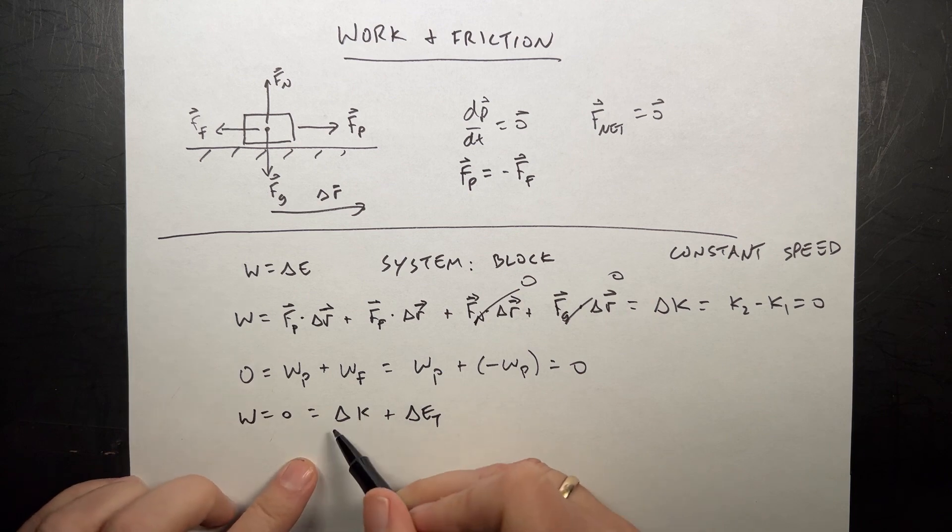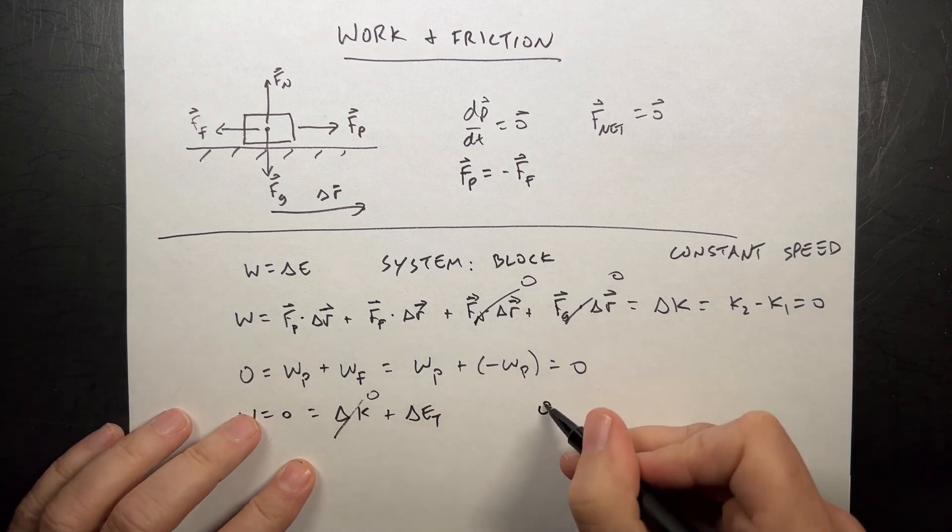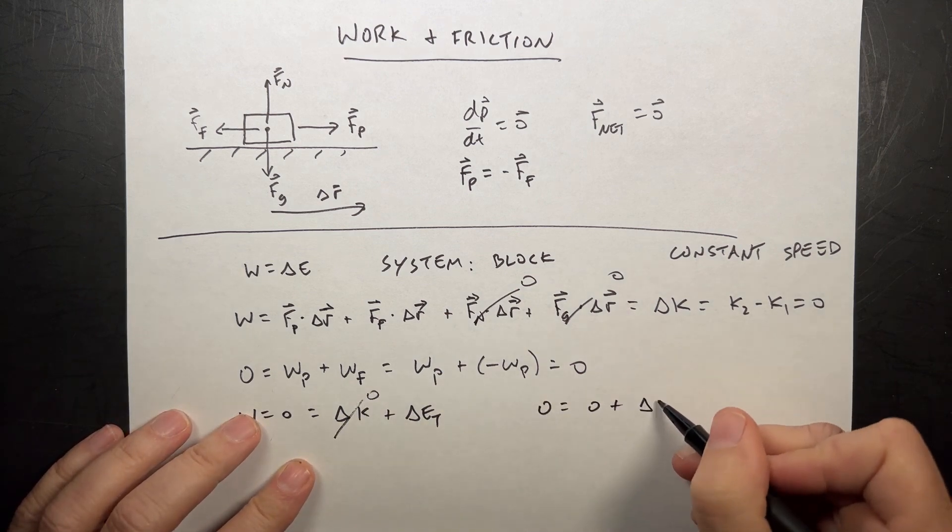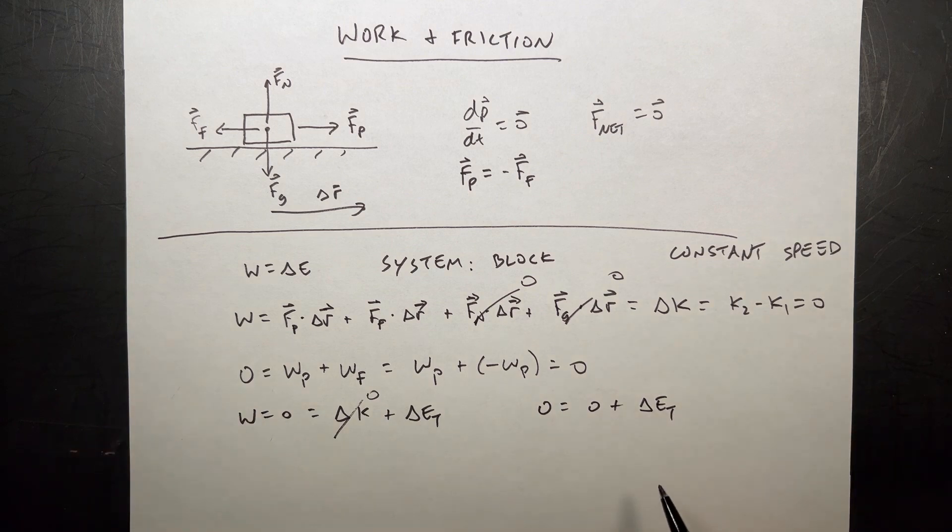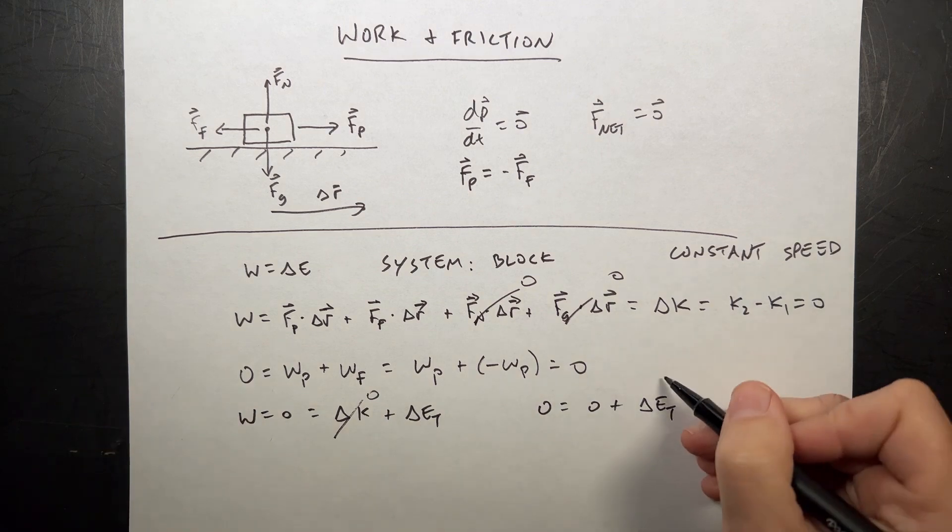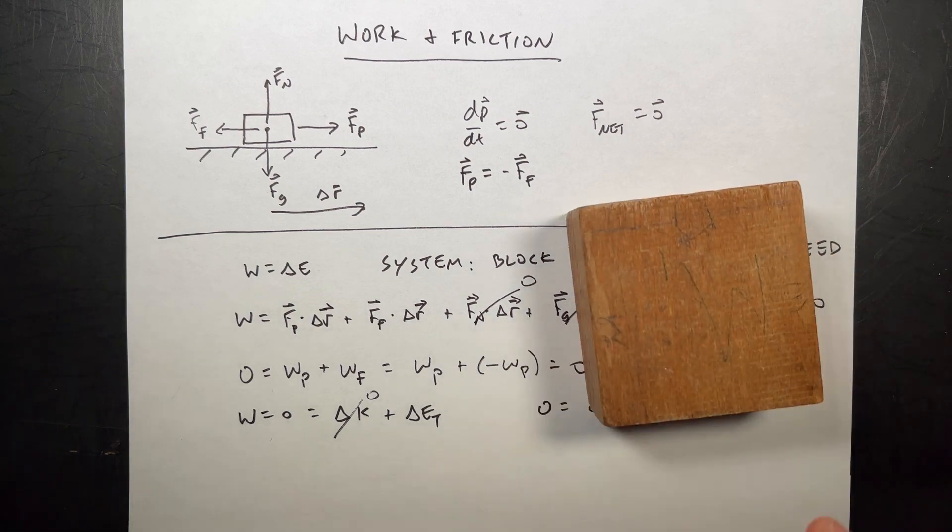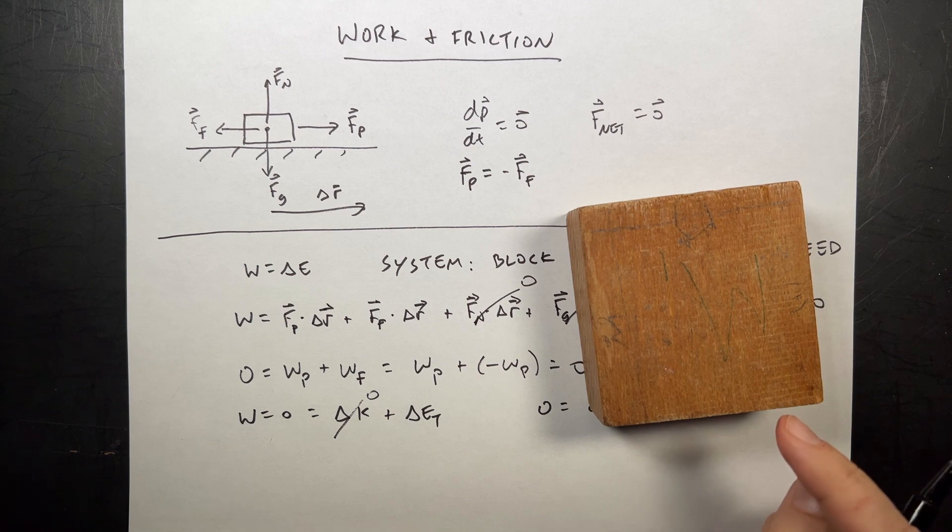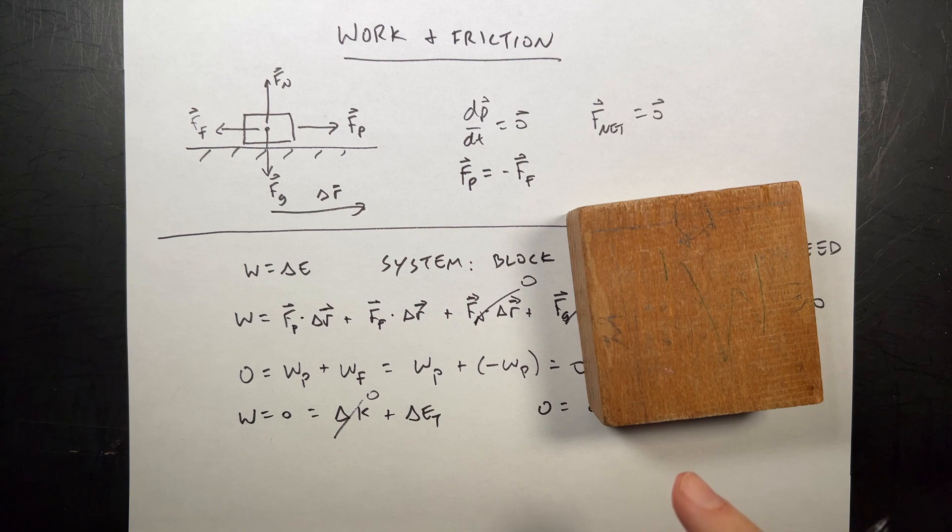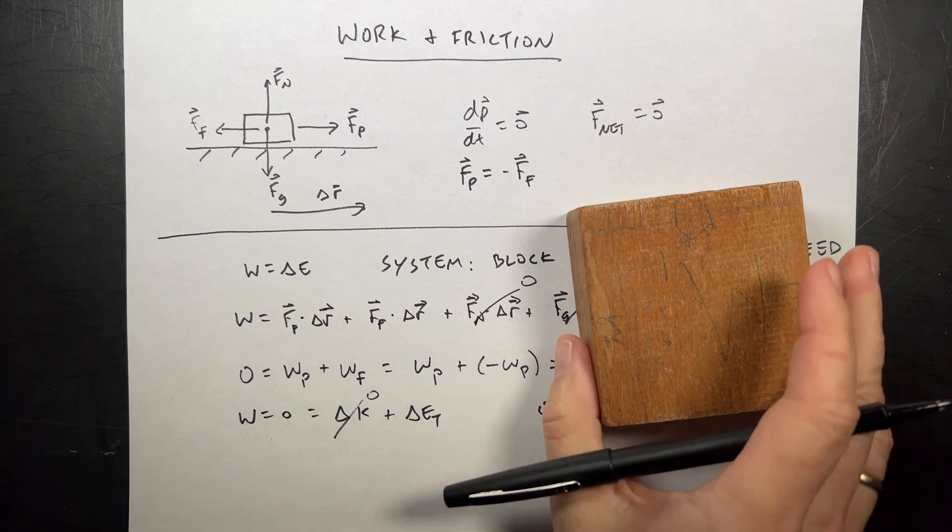Now I know that's zero. So I get zero equals zero plus delta E thermal. But I know that there's an increase in thermal energy. So where does that energy come from? What makes this block heat up? It's not the push because the work done by the push was equal and opposite to the work done by friction. So we have a problem.